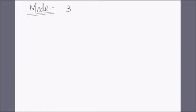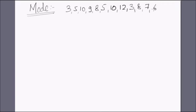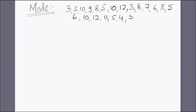Whenever there is a set of data given, the number which occurs for the maximum number of times is the mode. For example, let's say we have a raw data set: 3, 5, 10, 9, 8, 5, 10, 12, 3, 8, 7, 6, 3, 5, 6, 10, 12, 11, 5, 4, 5, and so on.